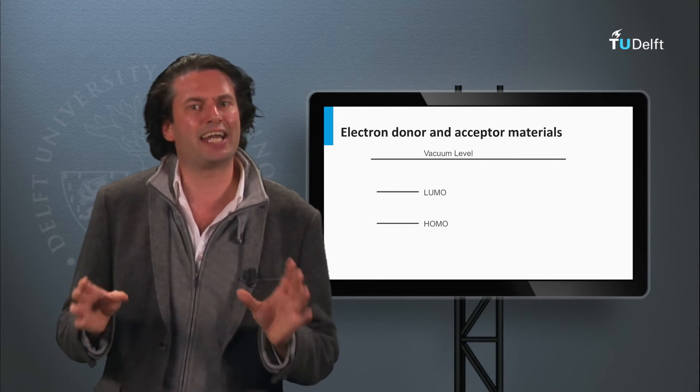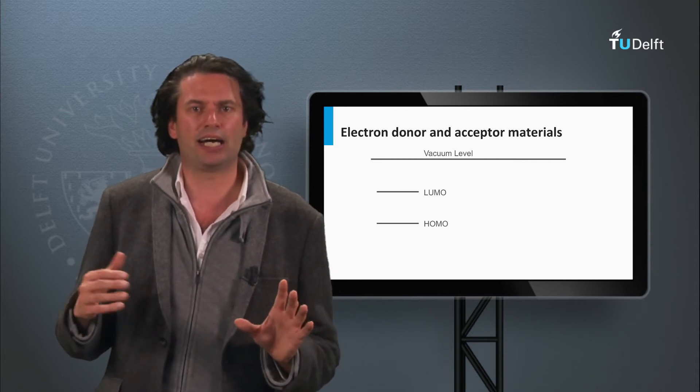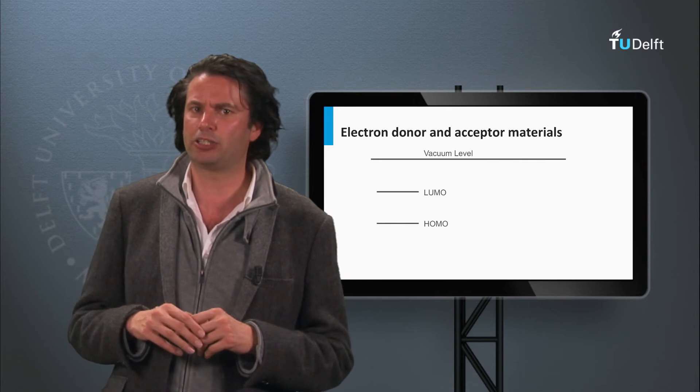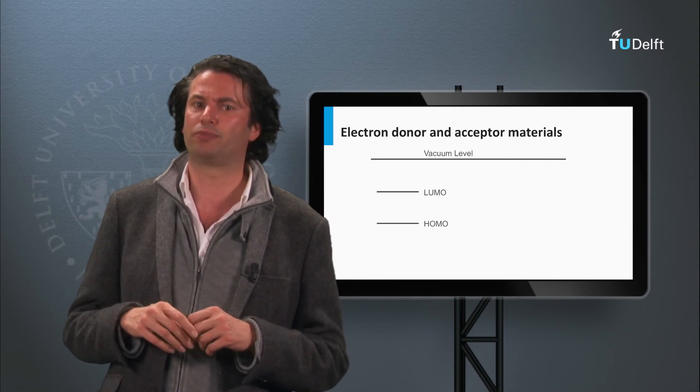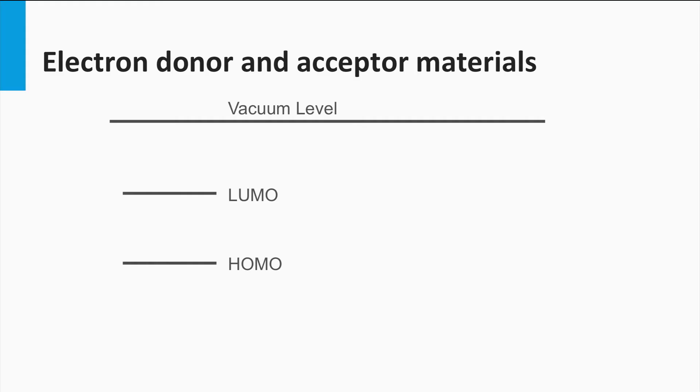To discuss whether an organic material is p-type or n-type, we have to discuss one concept which I did not discuss so far, the vacuum level. The vacuum level refers to the energy of a free stationary electron that is outside of any material, or in other words, in a vacuum.